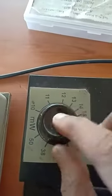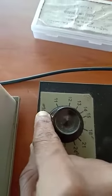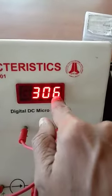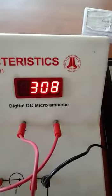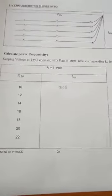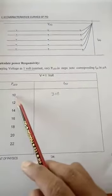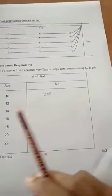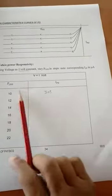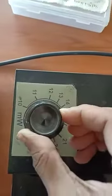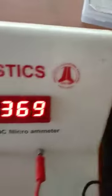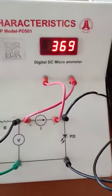For P_LED = 10, note down the corresponding microammeter reading — it is 308 microamps. We have tabulated the reading for P_LED = 10, current = 308. Now we go with P_LED = 12. Keep P_LED at 12 and note down the corresponding microammeter reading — it is 368.